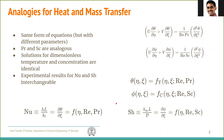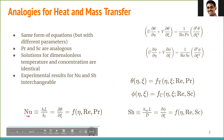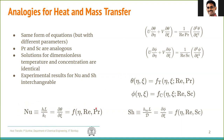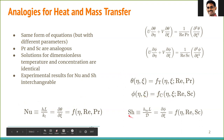The Nusselt number and Sherwood number are identical given the same equations and same boundary conditions. What this implies experimentally is that you could carry out an experiment to determine Nusselt number as a function of Reynolds and Prandtl, and because this functional form is the same, you can use it to determine the dimensionless mass transport coefficient, which is the Sherwood number.